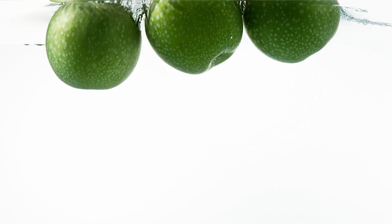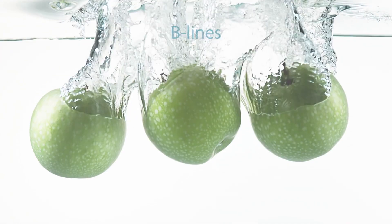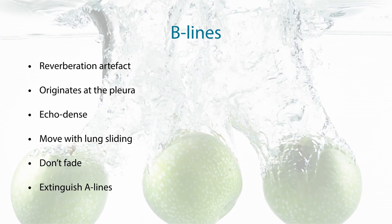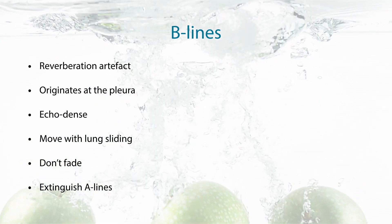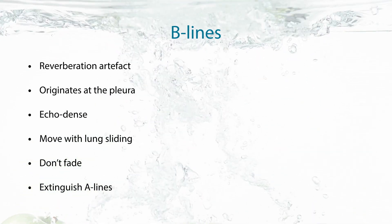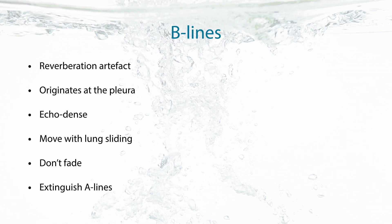What are B-lines actually? B-lines are reverberation artifacts. They always originate at the pleura. They are echo-dense — hyperechoic. They always move with lung sliding because they originate directly at the pleura. They do not fade until the end of the screen, and they also extinguish A-lines. Ultimately, we are imaging artifacts — yes, lung ultrasound is mostly about imaging artifacts.